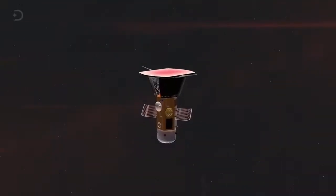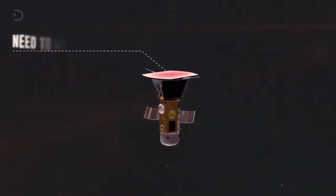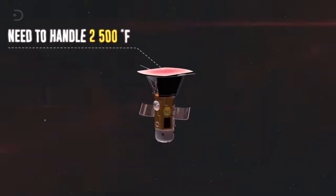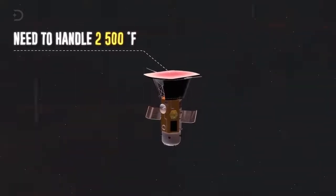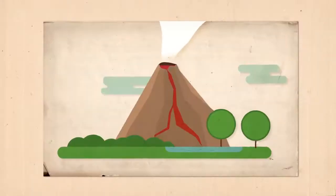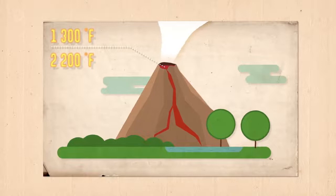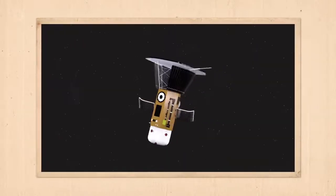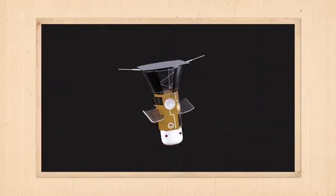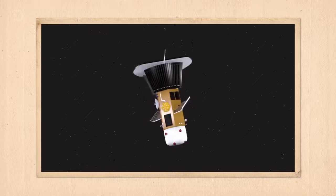Even though the probe will be traveling through space with temperatures of several million degrees, the surface of the heat shield will only need to handle 2,500 degrees Fahrenheit. If you want to compare that temperature to something, volcanic eruptions can be between 1,300 and 2,200 degrees Fahrenheit. Of course, that is still very hot, and the probe needed a shield to protect it.